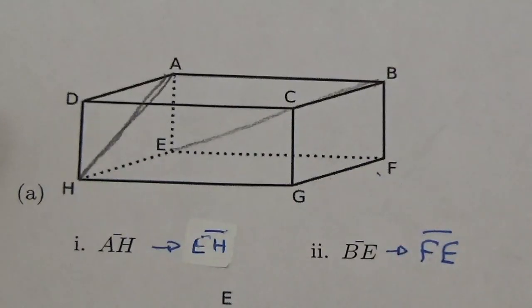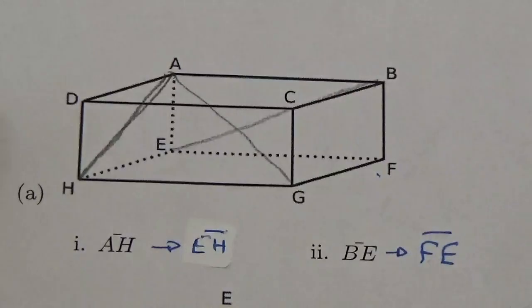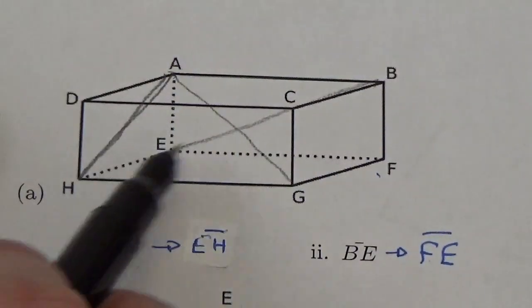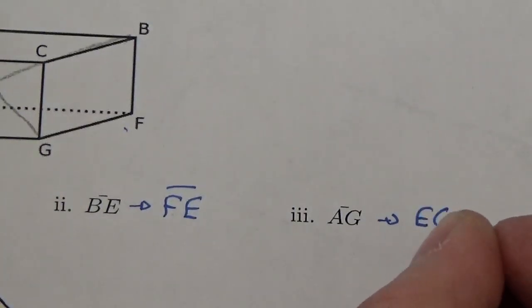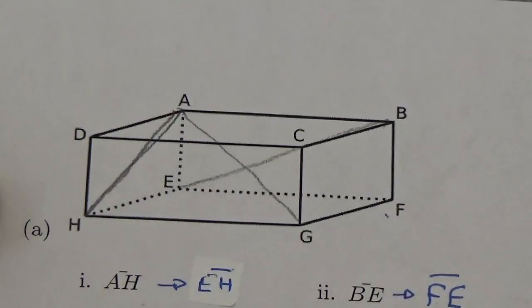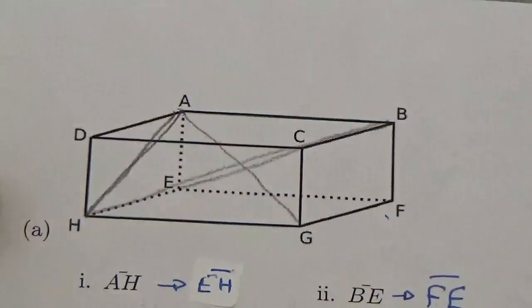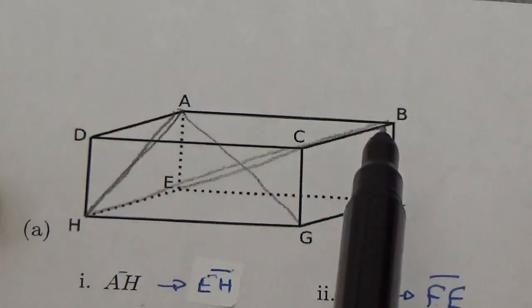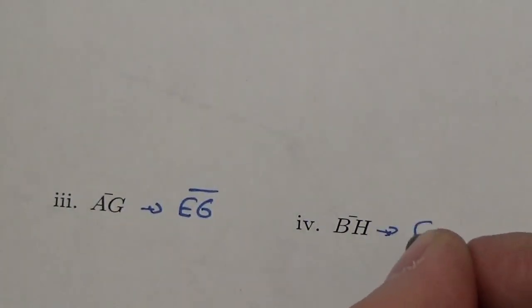AG is the line segment that runs basically right across the diagonal of that whole shape. A, when we project it down, is going to go to E, but G is already in that plane. So this is going to get projected onto EG. Then we're looking at BH, which is similar to AG — it goes right across the diagonal. H is in that bottom plane, and B gets projected onto F. So this is going to become FH.